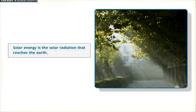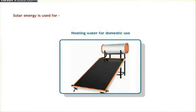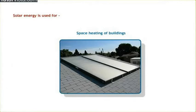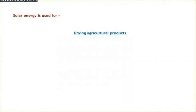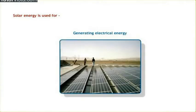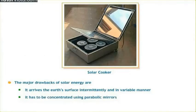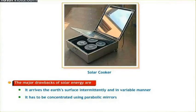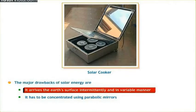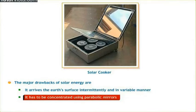The sun has produced energy for billions of years. Solar energy is the solar radiation that reaches the earth. Solar energy can be converted directly or indirectly into other forms of energy such as heat and electricity. Solar energy is used for heating water for domestic use, space heating of buildings, heating swimming pools, drying agricultural products, and for generating electrical energy. Major drawbacks of solar energy are that it arrives at the earth's surface intermittently and in a variable manner, and it has to be concentrated using parabolic mirrors.